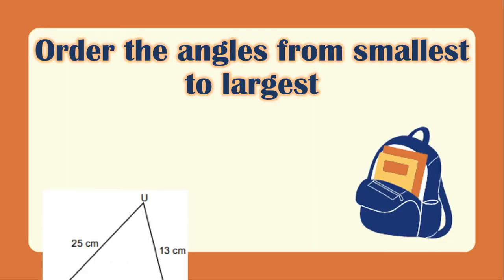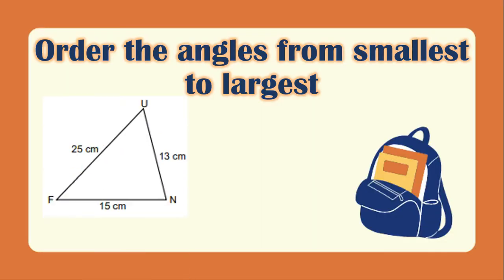Let's have another example. In this one, the shortest side is 13 cm, which is side UN, and its opposite is angle F. Next is 15 cm, whose opposite is angle U. And the last one, we have 25 cm, which has the largest angle, which is angle N.